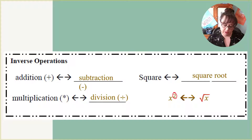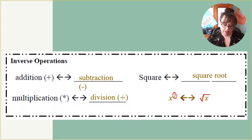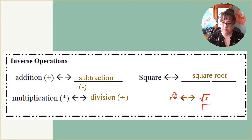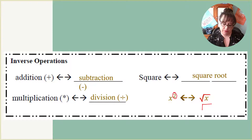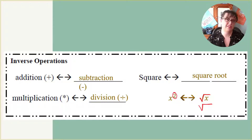Please notice that the radical symbol has almost like a check mark in the front and it goes over the entire expression. It is not a straight line — that is the division symbol. So there is a difference between the two. Make sure that yours has the check mark and then what is almost like the division bar over it.